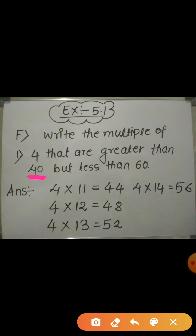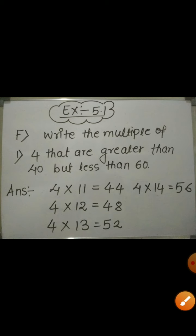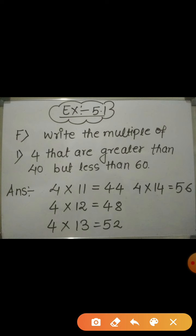But here we are asked to find out the multiples of 4 which are greater than 40. Hence, to get the multiples greater than 40, we need to multiply 4 by the numbers which are greater than 10. Hence, here you can see, I have multiplied 4 by the number 11. Then I have multiplied 4 by 12, 13 and 14.